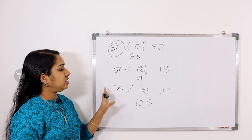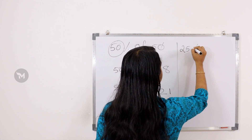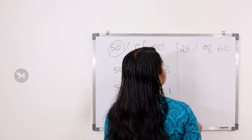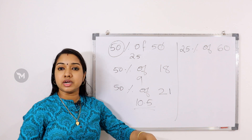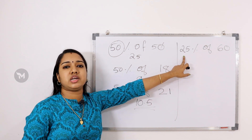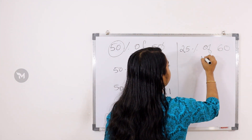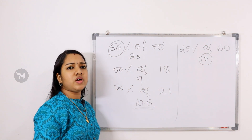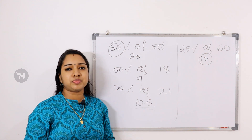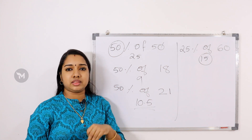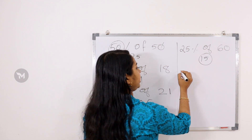Let's start doing 25%. For 25% of 60: if you take 50% of 60 you get 30, then 25% is half of that, so you get 15. If you have questions, practice this method. If you have a shortcut problem, use this method.